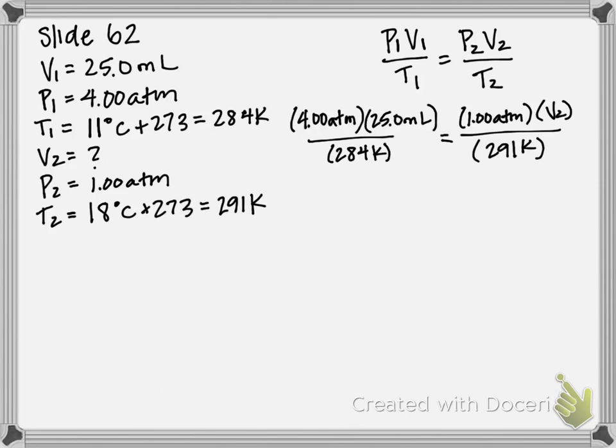So like I said with the previous ones, easiest way to solve this is to cross multiply. So that gives us 4 times 25 times 291, which gives us 29,100. And on the other side, it'll be 1 times 284, which gives us 284 times V2. And then to get V2 by itself, we just divide by 284 on both sides.